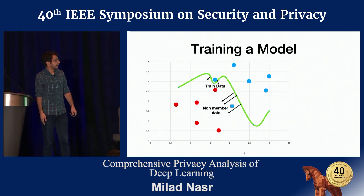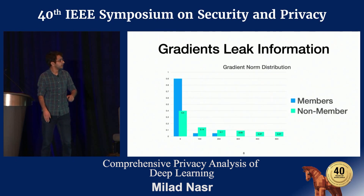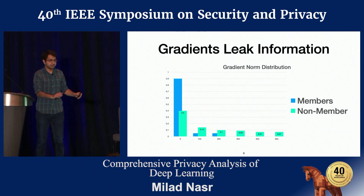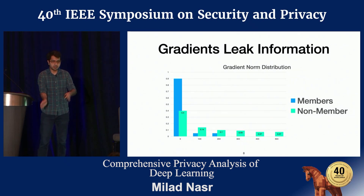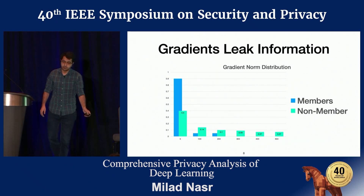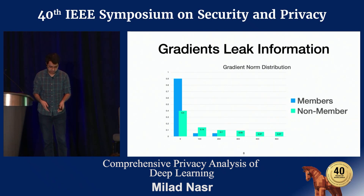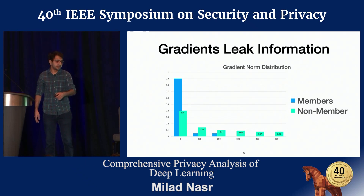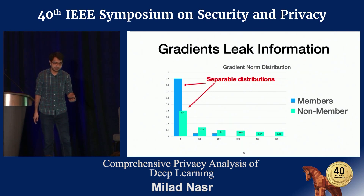Gradients behave differently for member and non-member data. To validate this hypothesis, we did a simple test computing the gradient norm for member and non-member data points. We saw that member data points have a much smaller gradient norm, which confirms that members have much smaller gradient vectors while non-member data points have much larger ones. This allows an attacker to differentiate between these two points and launch membership inference attacks.